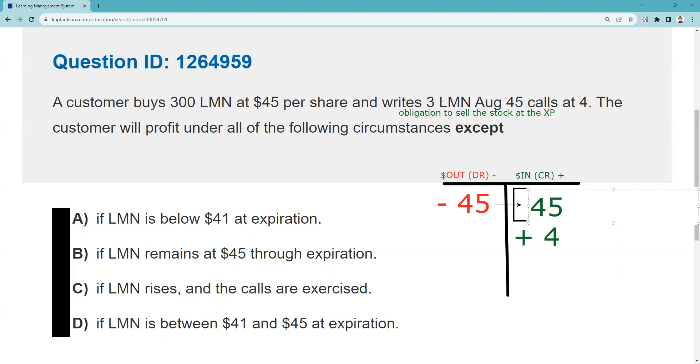So that is profitable. It says LMN rises and the calls are exercised—that means I have to sell the stock at $45, and again that is profitable. It says the stock is between $41 and $45. Well let's see, $42 would be in between those two numbers and yes it's profitable. $44 would be in between those two numbers and it's profitable. Yeah, between the break-even of $41 and the strike price I do make money. So in order by $41 I make money, and remember the question is below which do I lose money. And so the answer to this question is A. If I'm below $41, which is my break-even, I lose money.